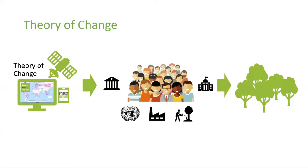Here's a little bit on our theory of change. We believe that by translating satellite imagery and combining it with local contextual data, government officials, civil society organizations, communities, and the private sector can use this information to enact policies for sustainable forest management, be held accountable to global commitments, improve supply chains, and empower forest defenders, ultimately leading to better outcomes for forests.